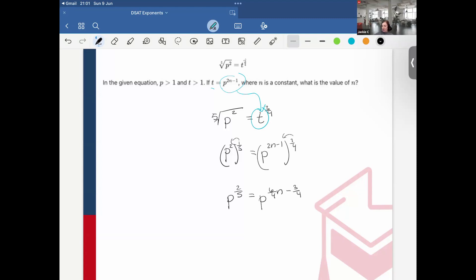And then I have my bases, p is the same, so now I can just set the exponents, remove the bases, and set the exponents equal to each other. So let's do that. Okay, so I'm going to also just bring the 3 fourths over, just to show step-by-step process.